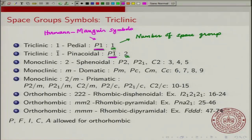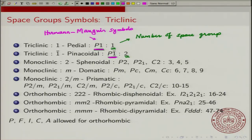If you have the 2/M prismatic crystal class, you have a total of six space groups. You can have P2/M, P2₁/M — a screw axis with a perpendicular mirror, C-centered with 2/M, P-centered with 2 where the mirror is a C-glide, P-centered with a screw axis and the mirror is a C-glide, or C-centered with a two axis and a C-glide. Notice that not all combinations are present — there are certain restrictions on which are allowed.